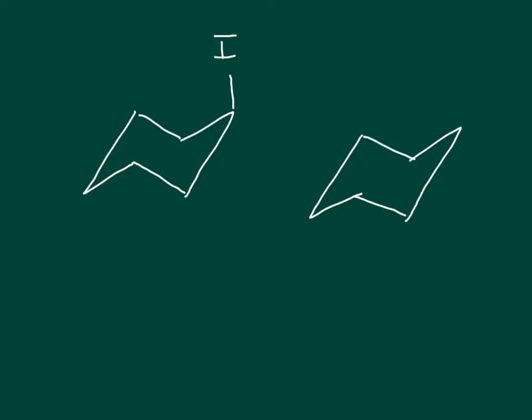When hexane rings with substituents do a chair flip, this action changes the position of any substituents on the hexane ring. And I'm going to show you a relatively easy way to observe the outcome of the chair flip and the resulting position. Now, as you can see to the right, I've drawn a blank chair conformation to show our outcome.